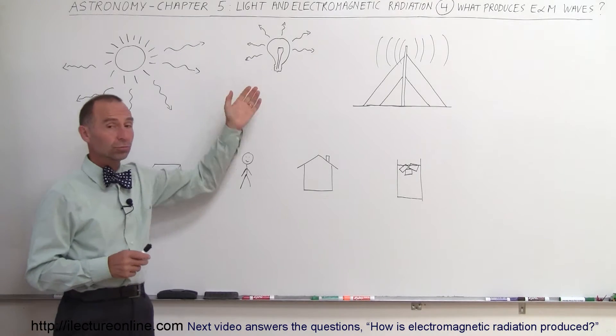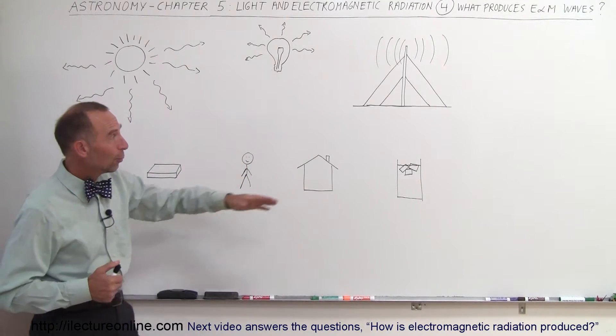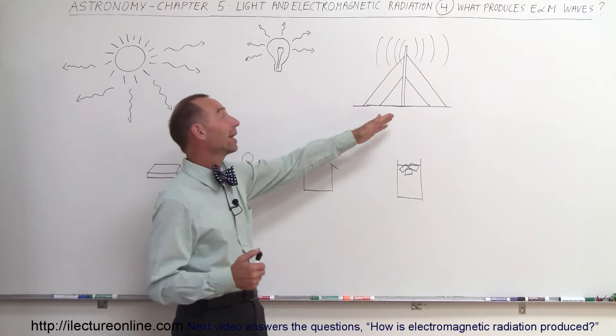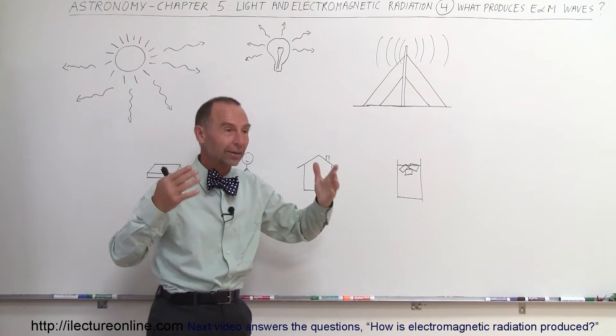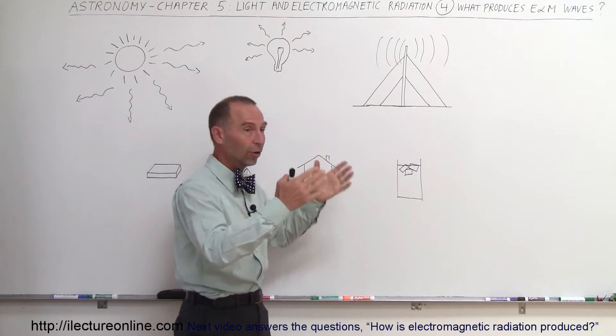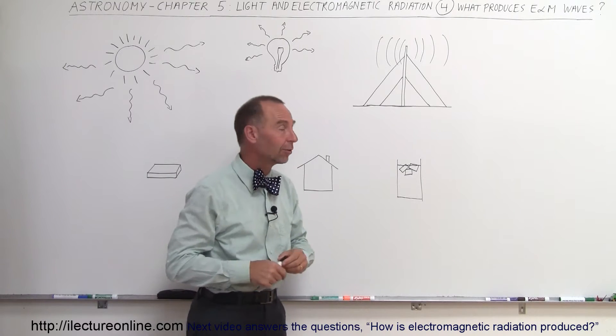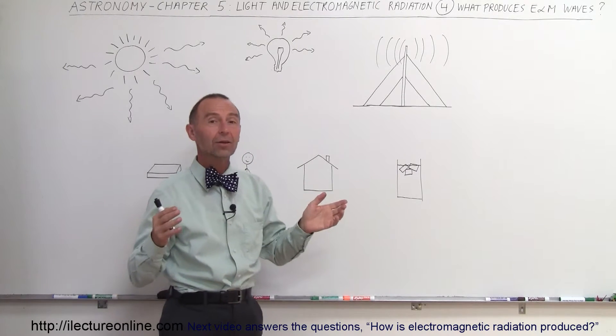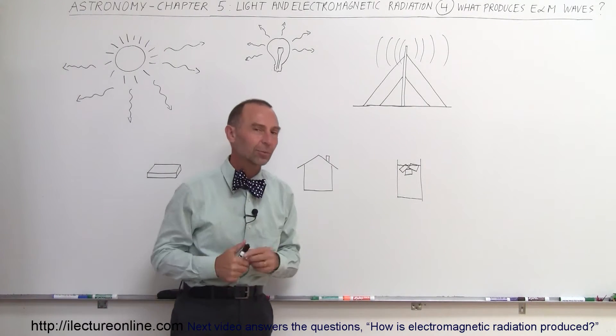Light bulbs do, fluorescent light bulbs do, and radio antennas. I try to draw a radio antenna here. The radio antenna broadcasts are produced via very tall, sometimes three, four, five hundred feet tall antenna towers that produce electromagnetic radiation.